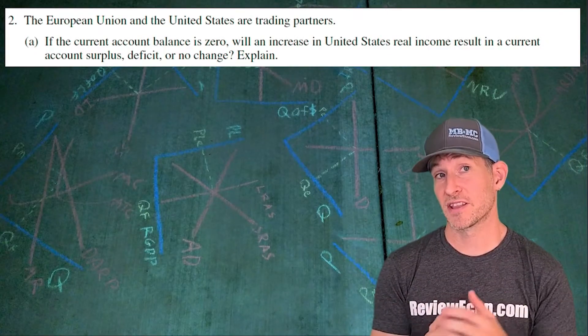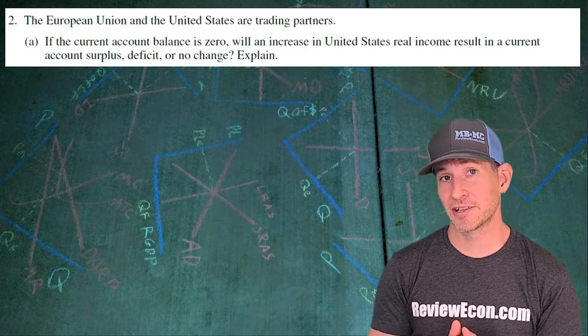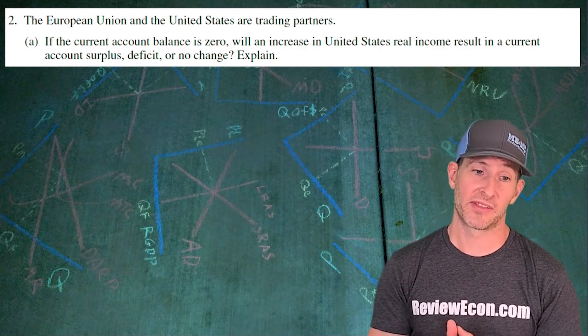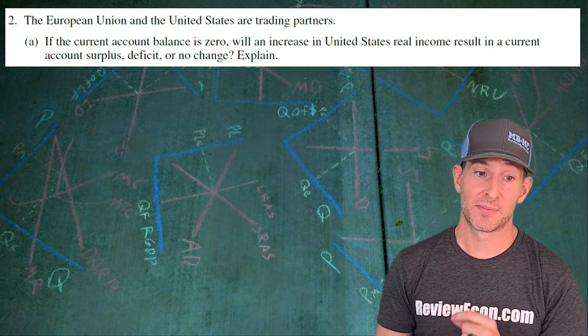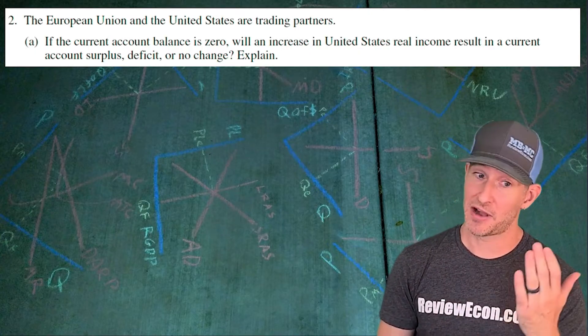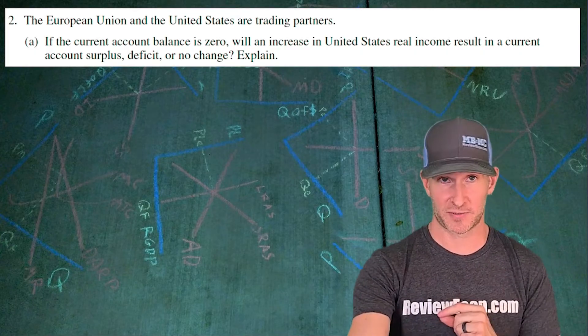Now for part A, we're going to start off with the assumption that we have a current account balance of zero and there's going to be an increase in real income within the United States. We have to explain the impact of that change in real income on that current account. Is it now in surplus, deficit, or no change? And we have to explain.